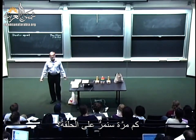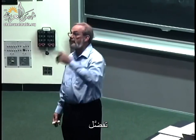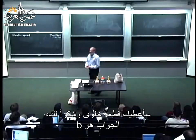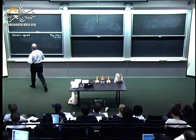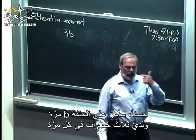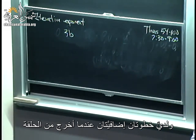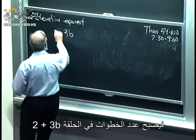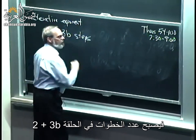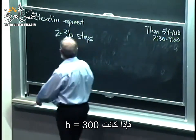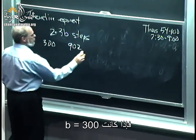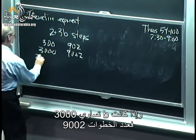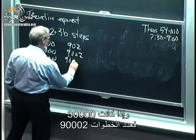How many times do we go through the loop? B times, because we're counting down each time around. So we take three B steps, plus two more steps for the initialization of answer and the return — giving us 2 plus 3B steps total. If B is 300, it takes 902 steps. If B is 3,000, it takes 9,002 steps. If B is 30,000, it takes 90,002 steps.